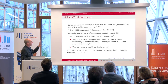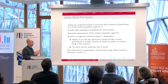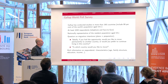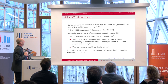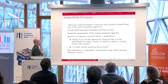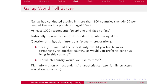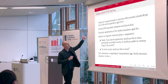The Gallup data are very rich. These are surveys conducted in more than 160 countries, covering 99% of the world population aged 15 and above. In each country there are at least 1,000 respondents — though for small countries like Luxembourg it can be less, around 500. For large countries like China it's much more than 1,000. The surveys are done by phone and face-to-face.